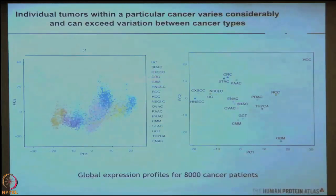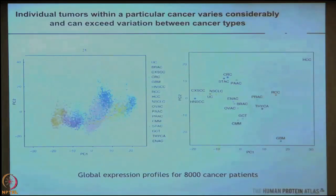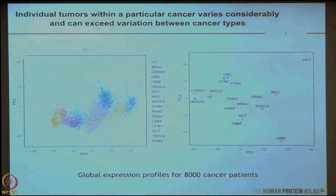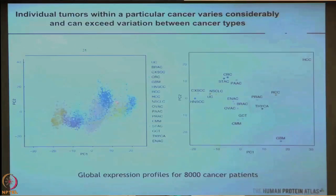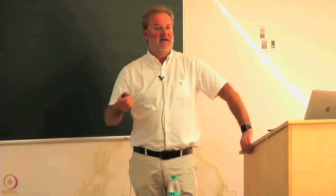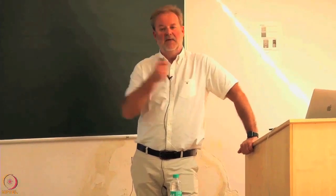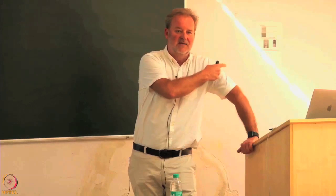One of the more interesting findings: this is all 8,000 patients and all 20,000 genes shown in a PCA plot. You can see the 17 different color codes, but the cancers form clouds which are highly overlapping. What this means is that a prostate cancer can be more similar to a breast cancer than to another prostate cancer.